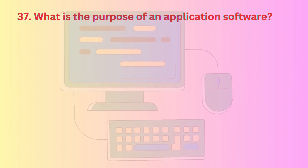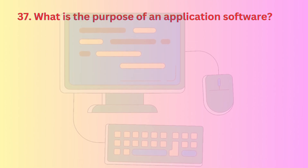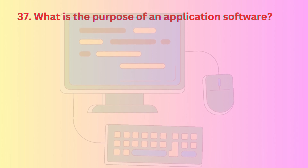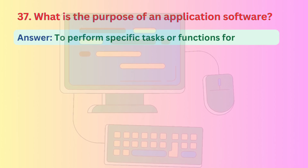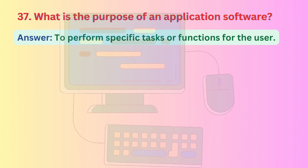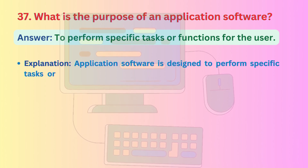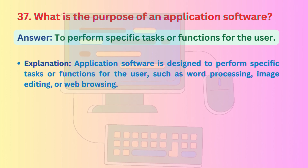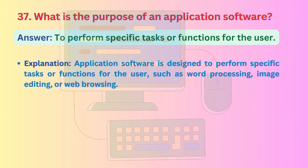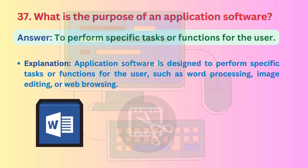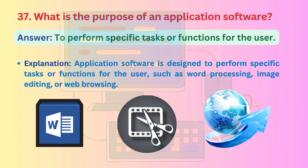Question 37: What is the purpose of application software? Application software is designed to perform specific tasks or functions for the user, such as word processing, image editing, or web browsing.